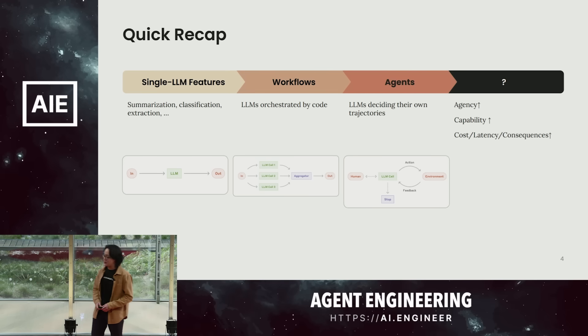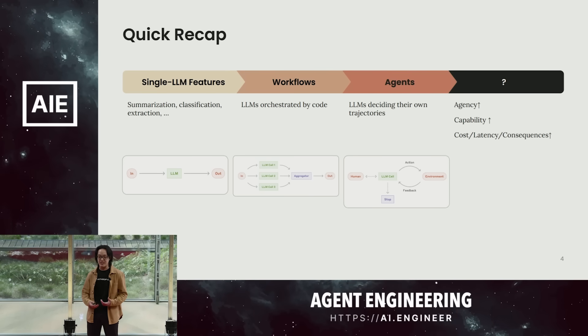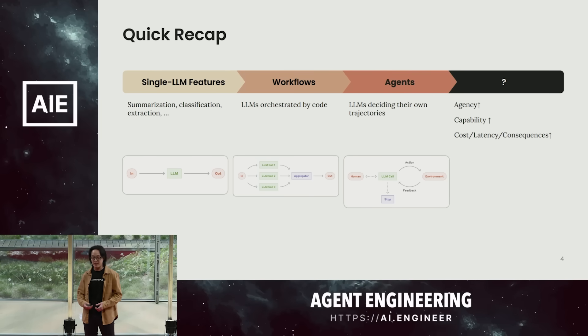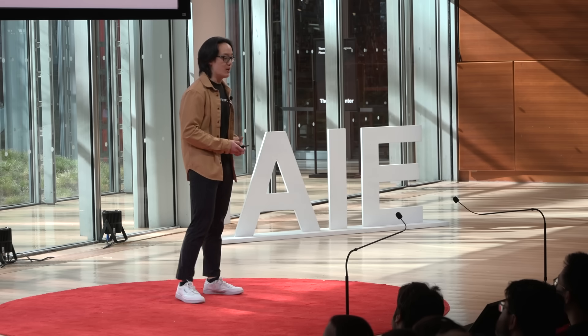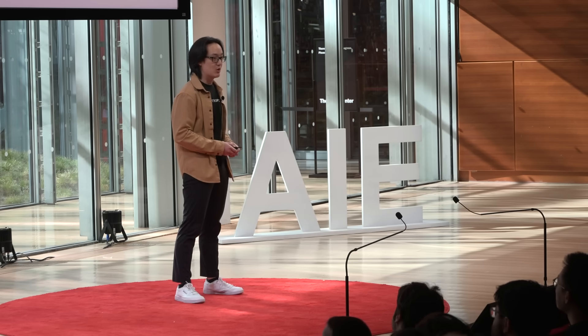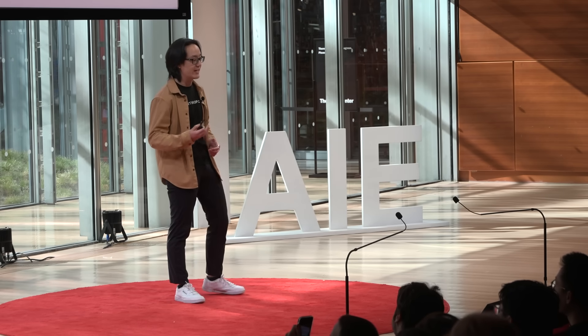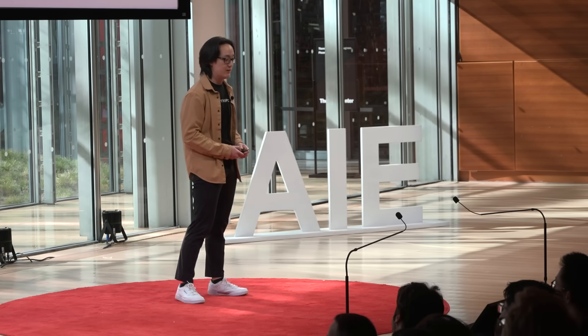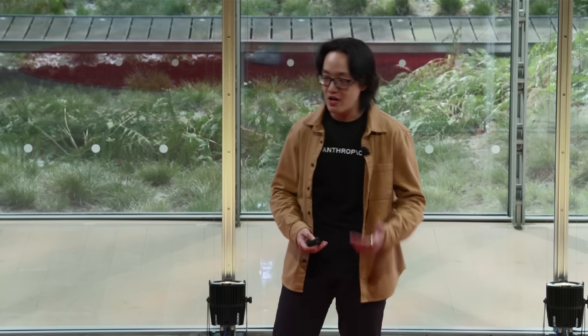It's probably a little bit too early to name what the next phase of agentic systems is going to look like, especially in production. Single agents could become a lot more general purpose and more capable, or we can start to see collaboration and delegation in multi-agent settings. Regardless, the broad trend here is that as we give these systems a lot more agency, they become more useful and more capable. But as a result, the cost, the latency, and the consequences of errors also go up.